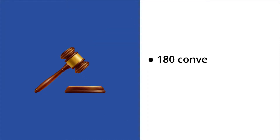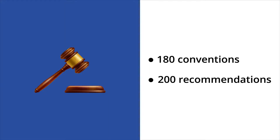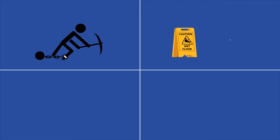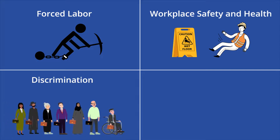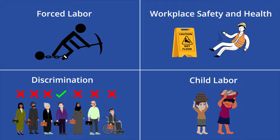In order to set labor standards, the ILO has passed over 180 conventions and 200 recommendations. Conventions are international treaties that are legally binding, while recommendations are non-binding but provide general guidance. The agency has passed agreements on topics including forced labor, workplace safety and health, discrimination, child labor, and more. After signing a convention, member states are required to send reports updating their progress, and they can also raise disputes against others who are failing to uphold standards.